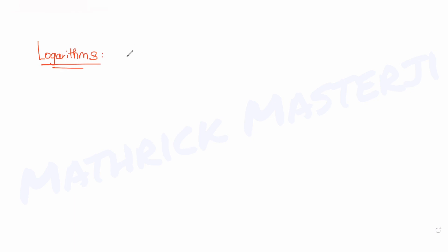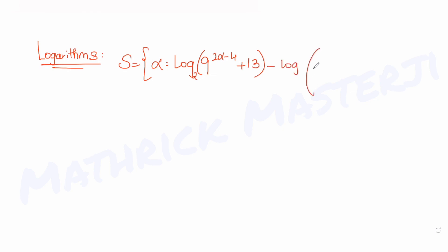the question tells us that S consists of alpha, which is given by the equation: log base 2 of (9^(2α−4) + 13) minus log base 2 of (5/2 · 3^(2α−4) + 1) is equal to 2. S is the set which consists of the values of alpha satisfying this equation.